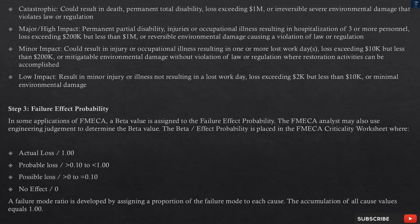Step 3: Failure effect probability. In some applications of FMECA, a beta value is assigned to the failure effect probability. The FMECA analyst may also use engineering judgment to determine the beta value. The beta/effect probability is placed in the FMECA criticality worksheet where: Actual loss = 1.00, Probable loss = greater than 0.10 to equals 0.10, No effect = 0. A failure mode ratio is developed by assigning a proportion of the failure mode to each cause. The accumulation of all cause values equals 1.00.